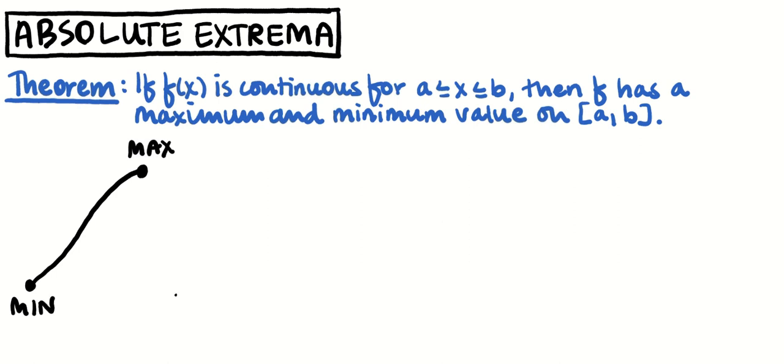Let me draw another one. Maybe, let's see, something like that. It was continuous, it's on a closed interval. So this is the minimum value right here and the maximum value occurred right up here at a critical point. That could have been sharp and it would have still been continuous and it still would have been a critical point and it still would have been the maximum on the closed interval a to b.